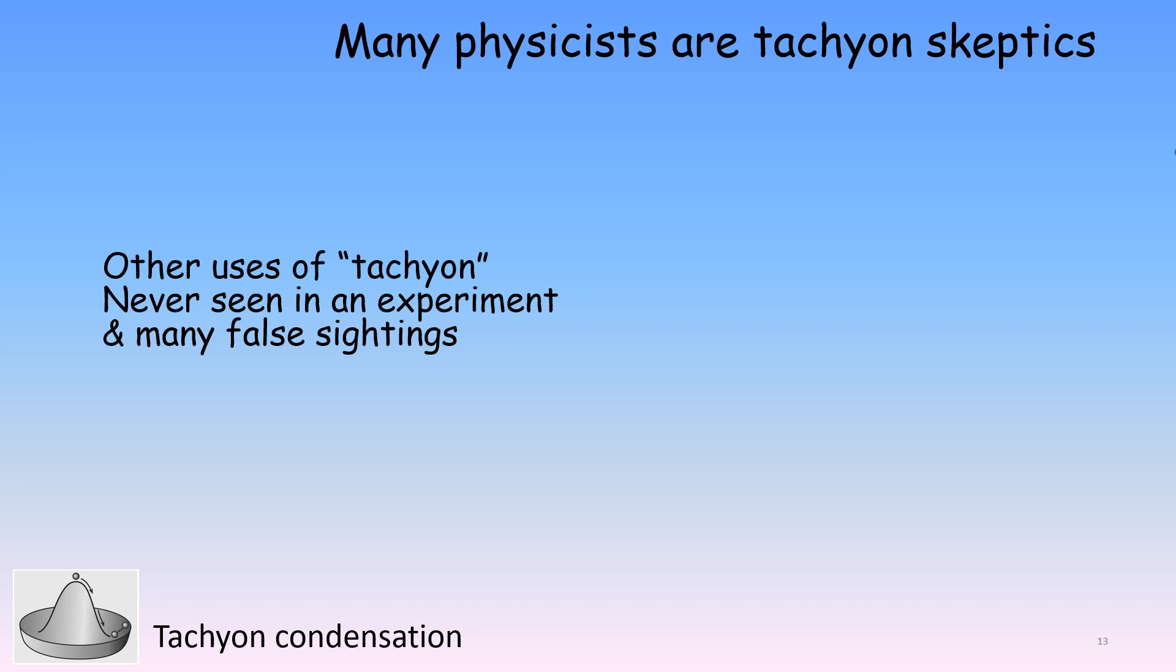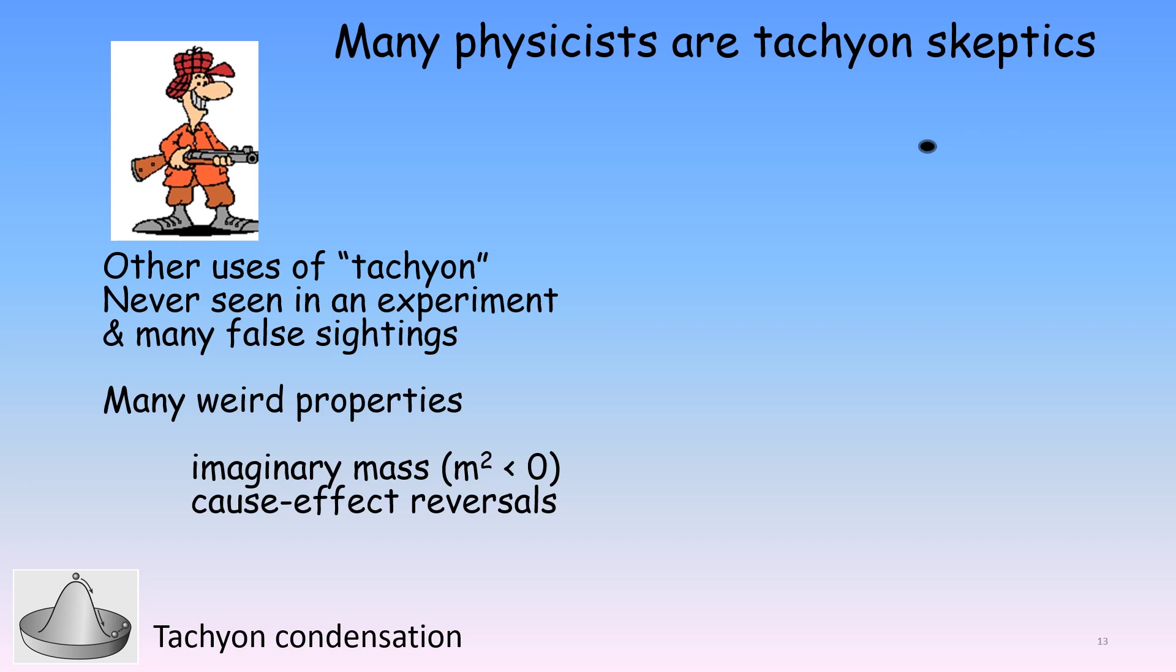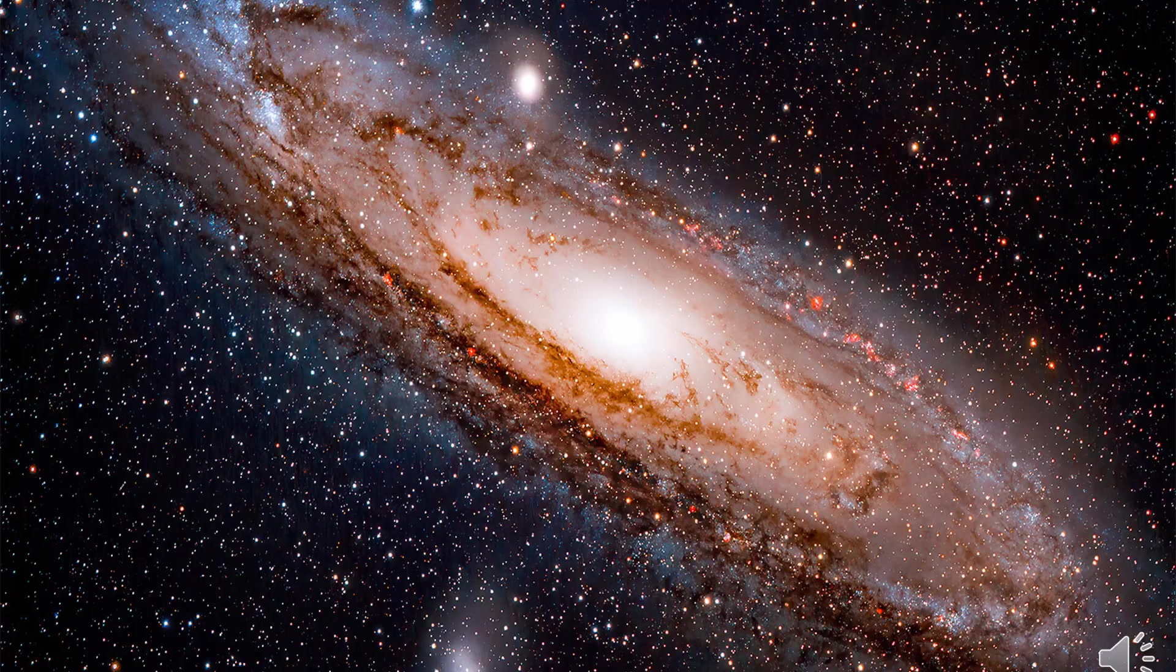Tachyons, if they exist, would have all kinds of weird properties, including an imaginary mass, meaning that the square of the mass would be negative. Even if they could not be used to send messages back in time, tachyons would exhibit reversals of cause and effect. An example would be the case of firing a gun with tachyon bullets, which would appear to some observers to enter rather than leave the gun. In addition, tachyons might even destabilize the universe by the spontaneous creation of positive and negative pairs of them out of the vacuum.